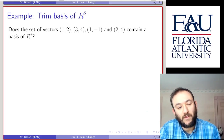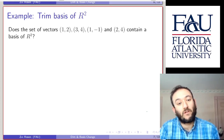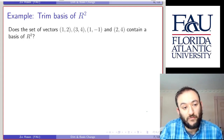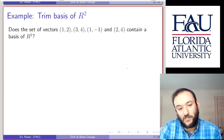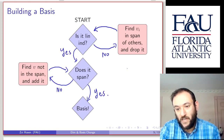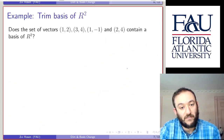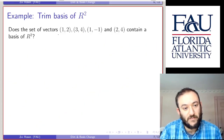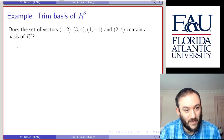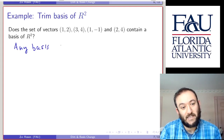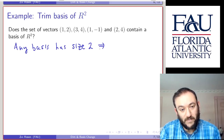Now let's trim a basis. We want to ask if the set of vectors {(1,2), (3,4), (1,-1), (2,4)} contains a basis of R2. Following our flowchart, we check linear independence. Since any basis of R2 has size 2, a set of size 4 is definitely too big and therefore linearly dependent.